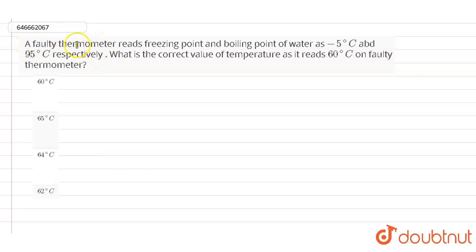So guys, here in this question it is given that a faulty thermometer reads a freezing point and a boiling point of water as minus 5 degrees Celsius and 95 degrees Celsius respectively. What is the correct value of the temperature as it reads 60 degrees Celsius on faulty thermometer?